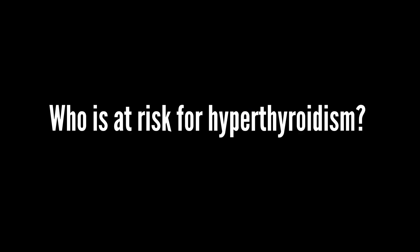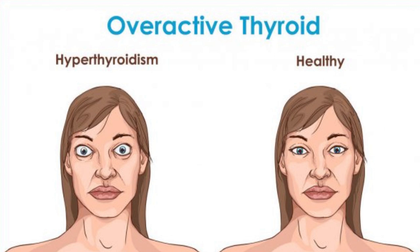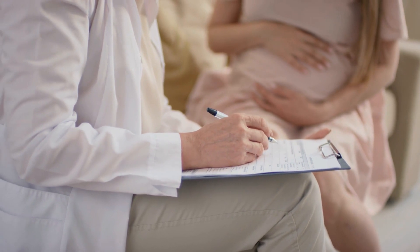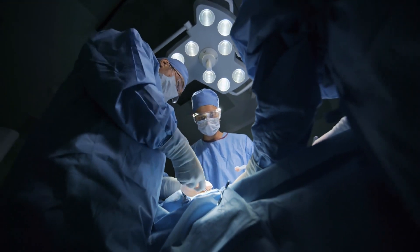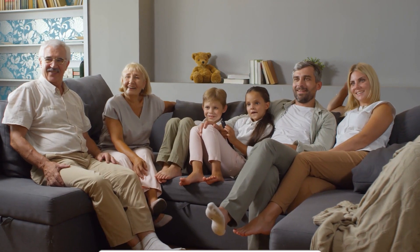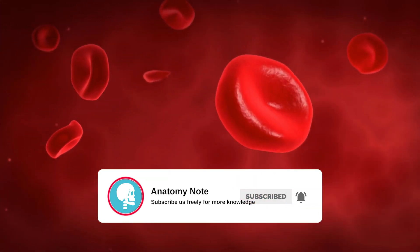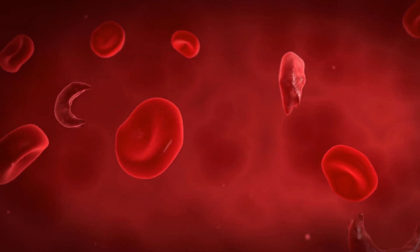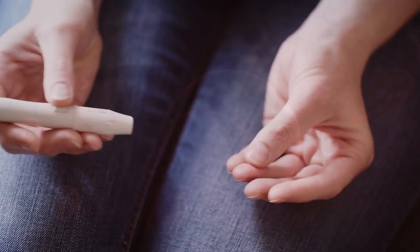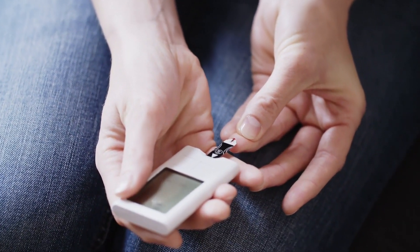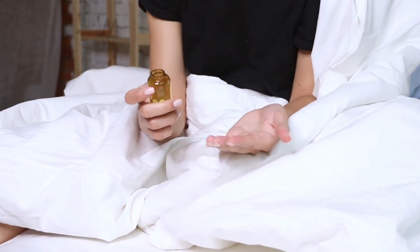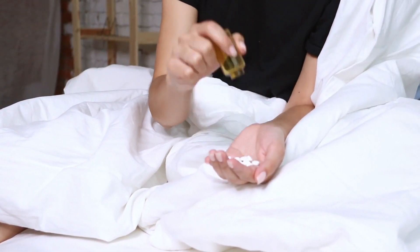Someone is at higher risk for hyperthyroidism if they are a woman or older than age 60, have been pregnant or had a baby within the past 6 months, have had thyroid surgery or a thyroid problem such as goiter, have a family history of thyroid disease, have pernicious anemia, have type 1 diabetes or primary adrenal insufficiency, or get too much iodine from foods, medicines, or supplements.